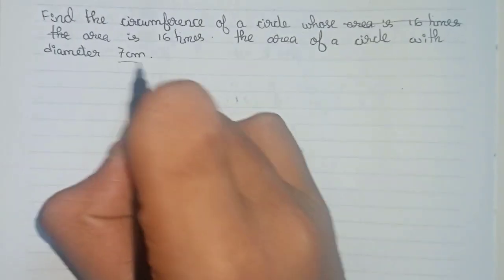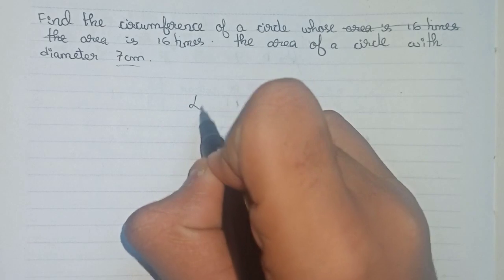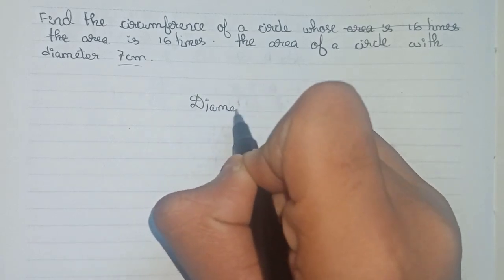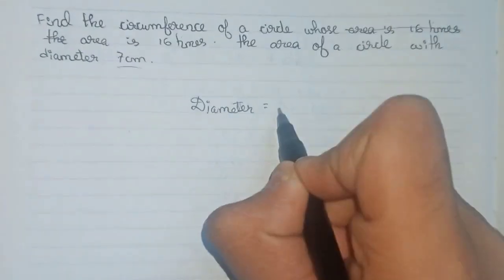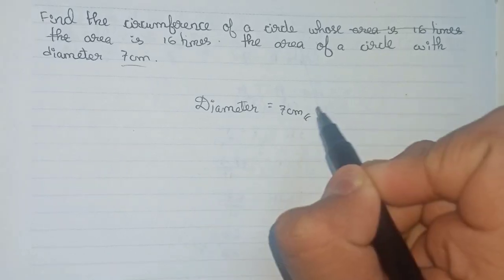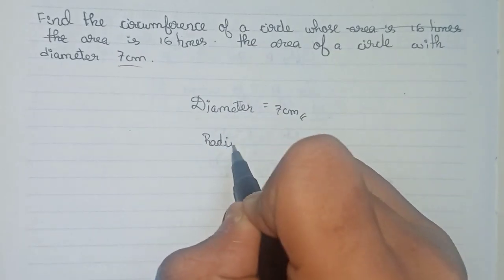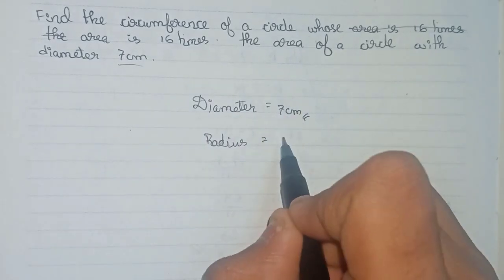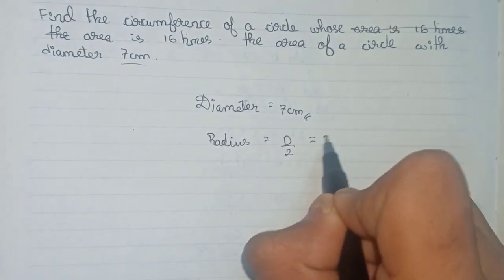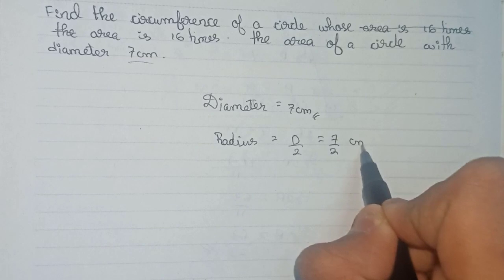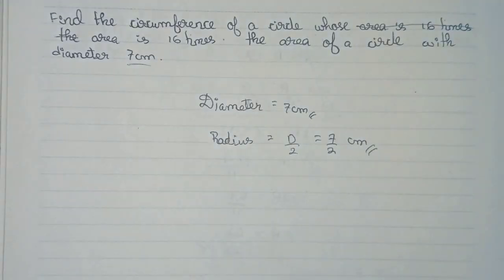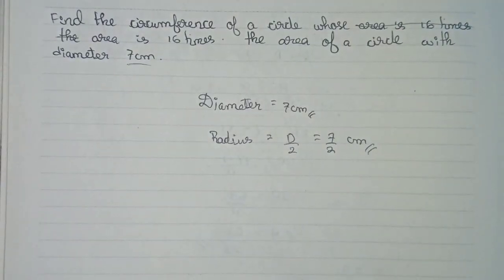So at first, it is mentioned that the diameter is 7 centimeter, so diameter equals 7 centimeter. Now you know that radius is equal to diameter by 2, so 7 by 2 centimeter is our radius.